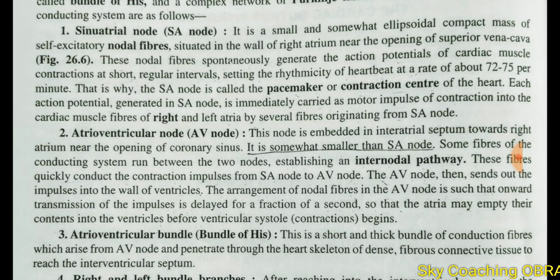This rhythmic activity occurs 72 to 75 times per minute. The impulse is generated by this node at that rate. Because it sets the pace of the heartbeat, this node is known as the pacemaker.